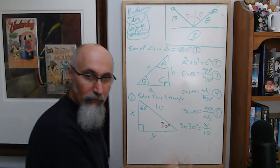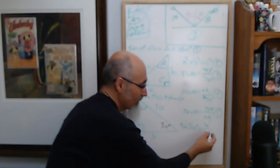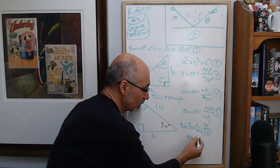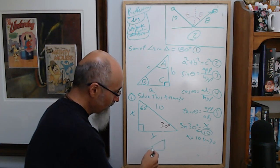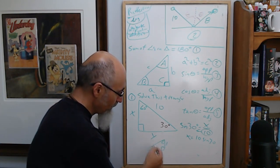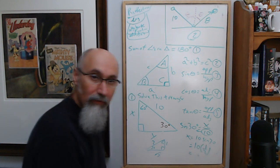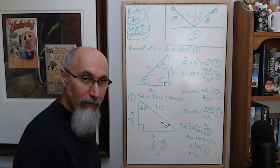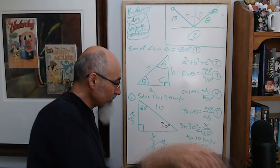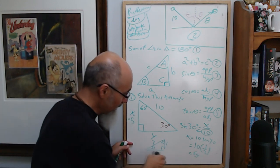Sine of 30 is from the special triangle: 30-60-90 has ratios 1, root 3, 2. Sine of 30 is 1 over 2. So X equals 10 times 1 over 2, which is 5. You could have also used 60 degrees to find X. I usually always use the information given rather than calculated values, just in case I made a mistake — so the error doesn't carry over.